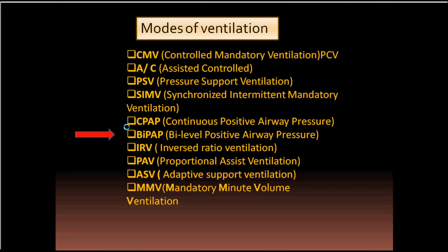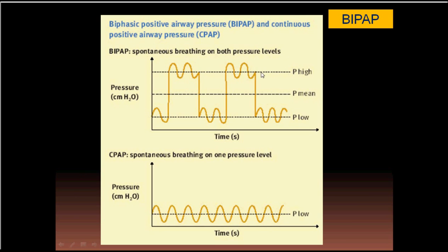Today I'm going to talk about another mode of ventilation which is BiPAP, or Bi-Level CPAP Ventilation. It is two levels of CPAP: one is high and the second one is low. It is a CPAP — continuous boost of air pressure — set at a high level and another at a low level, which is not a PEEP but a CPAP.